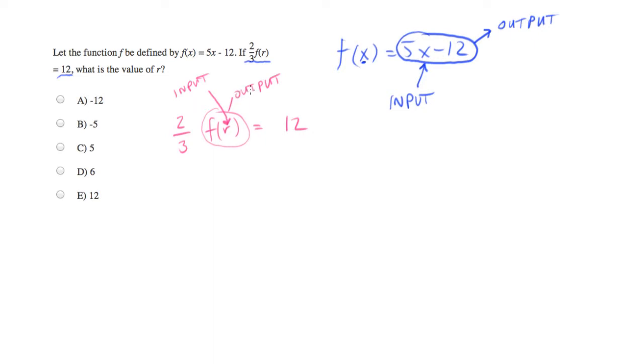So in the equation we were given originally for f of x, everywhere that there's an x, let's put an r in. So we'll end up with two-thirds, and here's f of x with r in place of x. That's 5r minus 12.